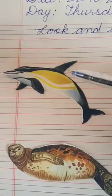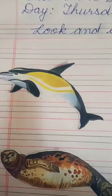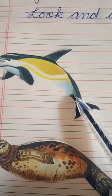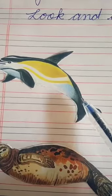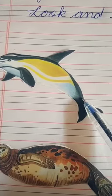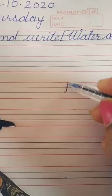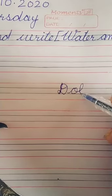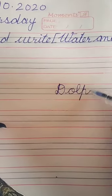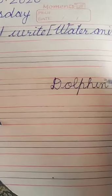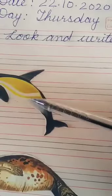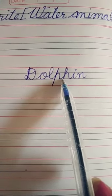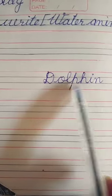First we have to recognize the pictures and then we will write the correct name in front of them. Like the first picture is of dolphin. Which picture is this? Dolphin. And what is the spelling of dolphin? D-O-L-P-H-I-N. Dolphin.